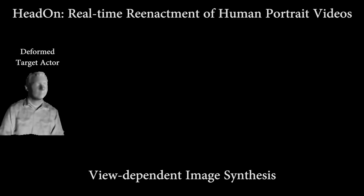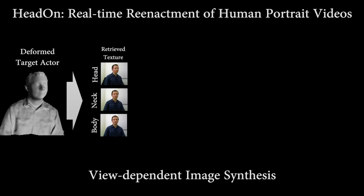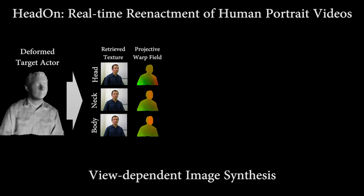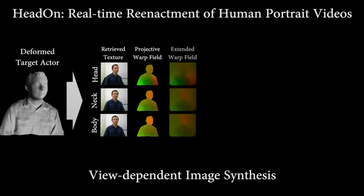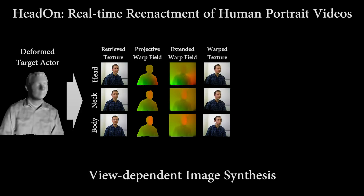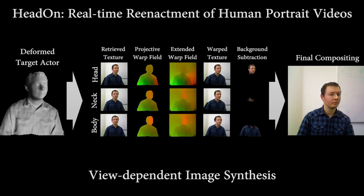Since the scanned color is a voxel hash in our course, we propose a view-dependent image synthesis. We partition the target proxy mesh into three parts: head, neck, and body. For these three parts, we retrieve the nearest textures from the initial video sequence. We then render the mesh into the space of the target image, compensating for the incomplete reconstruction by using an image warp field. We then composite all three parts to generate the desired output image.